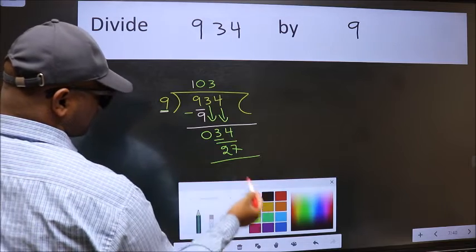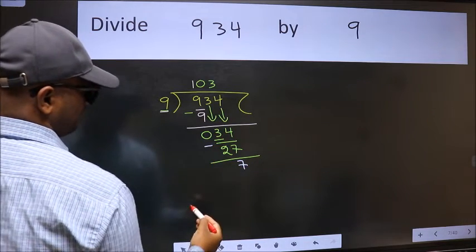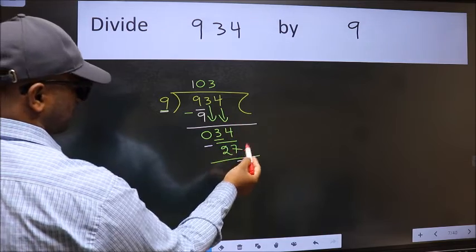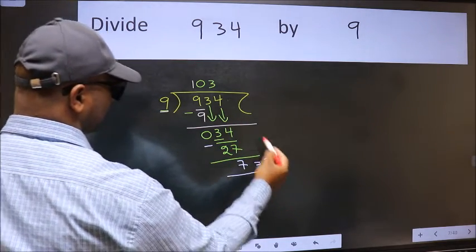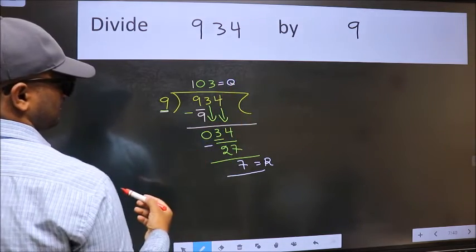Now we should subtract, we get seven. No more numbers to bring down, so we stop here. This is our remainder and this is our quotient here.